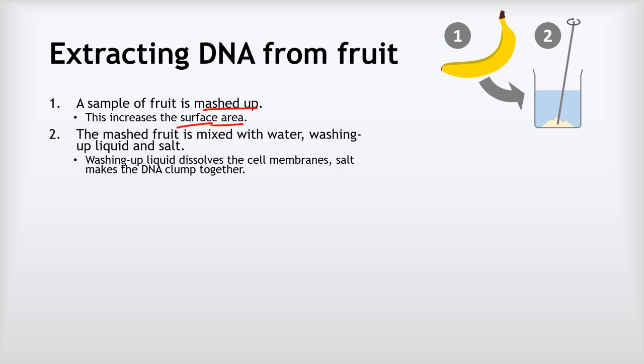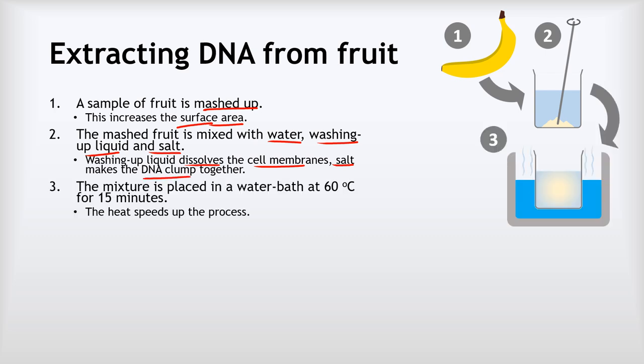The second thing we do is we mix our mashed up fruit with some water, some washing up liquid, and some salt. The washing up liquid dissolves the cell membranes and that allows the DNA to be released from the cells, and the salt helps to make the DNA clump together. Next, we place the mixture in a water bath at 60 degrees Celsius for about 15 minutes, and that just speeds up that process of dissolving those cell membranes and making the DNA clump together.